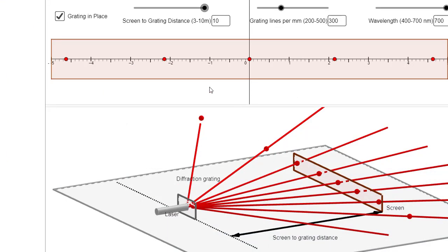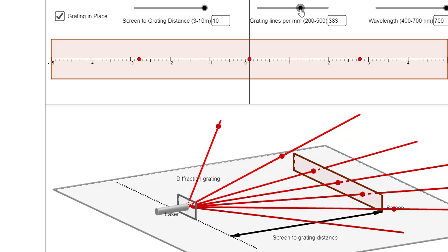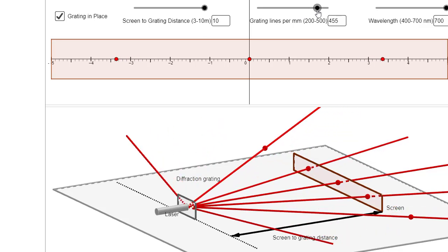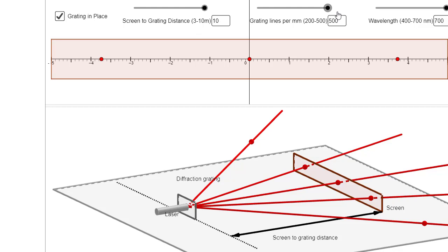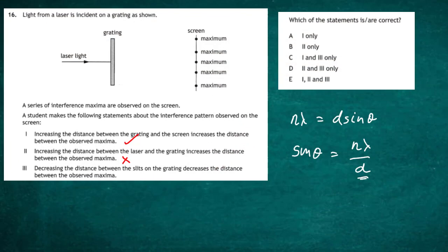In this simulation, the grating is expressed as lines per millimetre. Decreasing d means increasing lines per millimetre. Increasing the lines per millimetre, we can see the distance between the maxima is definitely getting bigger. So the third statement — that decreasing slit distance decreases the distance between maxima — is actually wrong. We're left with just statement one, giving us answer A.